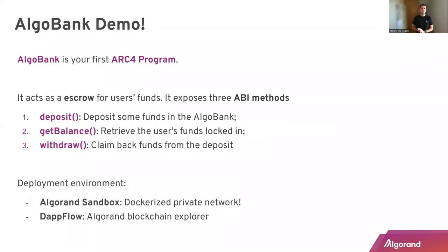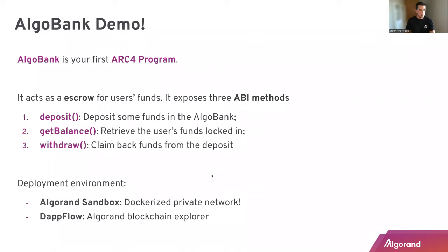All right, so from theory to practice. Now that's it for the ABI theory, and let's see how we can work with that. I want to show you the AlgoBank demo, which is a demo available on the documentation of PyTEAL. This is basically the first ARC-4 program you will see today. AlgoBank is a smart contract — ABI compliant — which acts as an escrow for user funds, like a bank. This smart contract exposes three methods: a deposit, a get_balance, and a withdraw method.